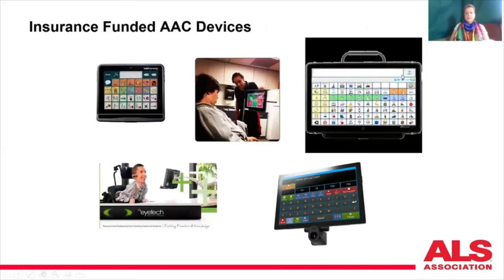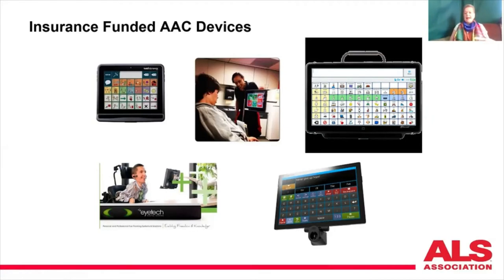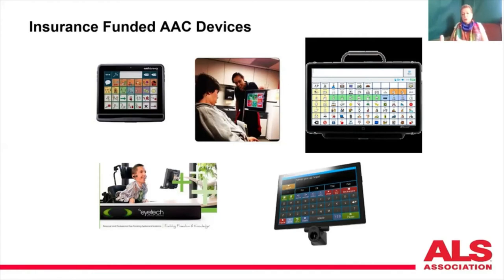Here are some examples of insurance-funded devices. You can get a device that is like a tablet, and as your disease progresses and you can no longer use your hands, we can add additional access methods onto that existing tablet-like device. So you might get a device when you first have hand function, and then as the disease progresses we can modify it through your insurance so you can continue to access it.